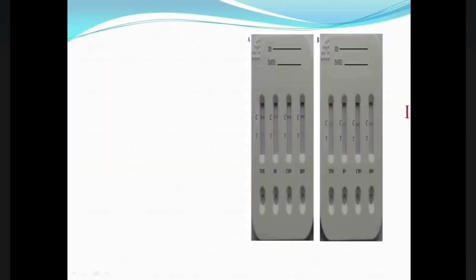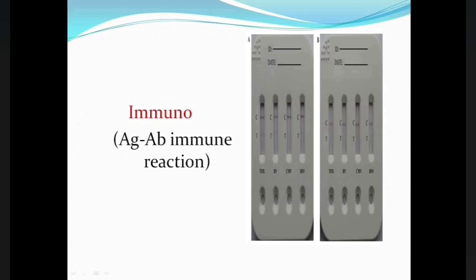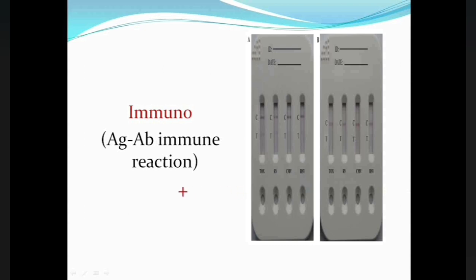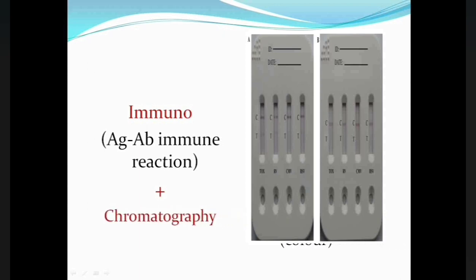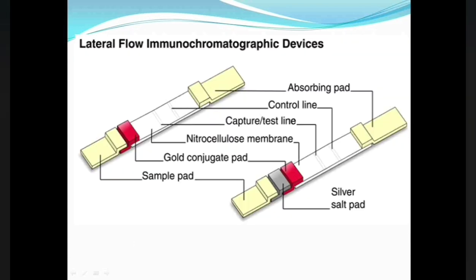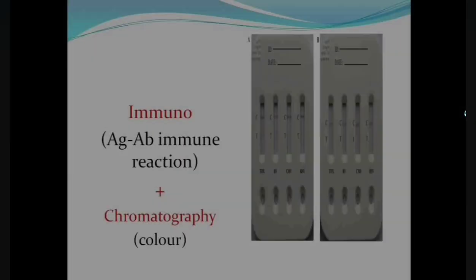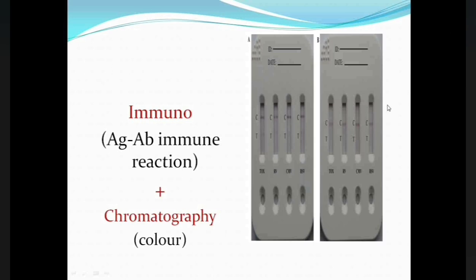To understand the word immunochromatography, we divide it into two parts: the first is the word 'immuno' and the second is the word 'chromatography.' Here, 'immuno' means that an immune reaction is occurring between an antigen and an antibody. The chromatography part contains the word 'chrome,' which means color. The importance of color is that results are interpreted by reading the colored lines in the kit.